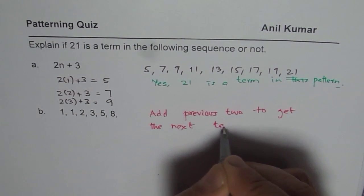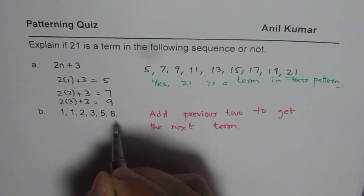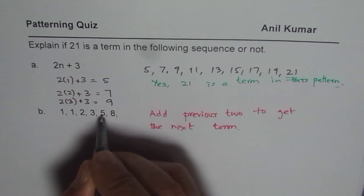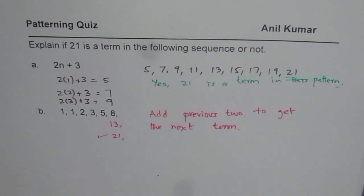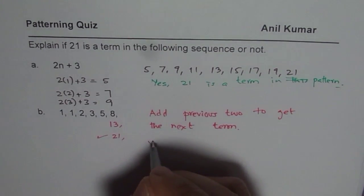So add the previous 2 to get the next term. So that is how this pattern can extend. So let us add 5 and 8. When I do 5 plus 8, I get 13. And if I add 8 and 13, I do get 21. So 21 is a part of this pattern also. So the answer is yes.